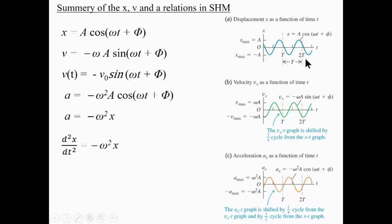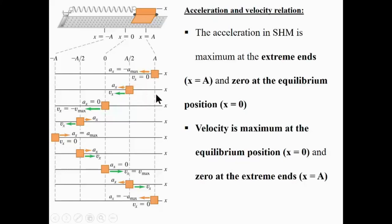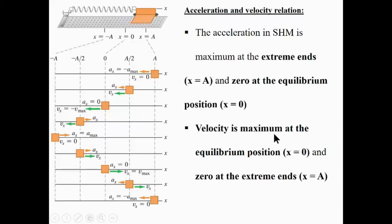In simple harmonic motion, acceleration is maximum at the extreme ends — when the particle is at its maximum displacement, it has maximum acceleration. Velocity is zero at the extreme ends because the particle must momentarily stop there. Conversely, velocity is maximum at the equilibrium position, and acceleration is zero at the equilibrium position.